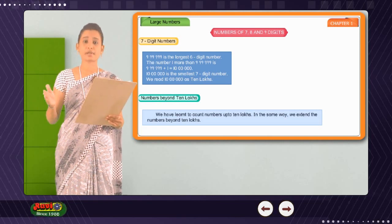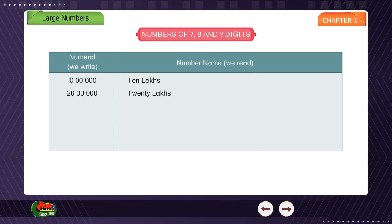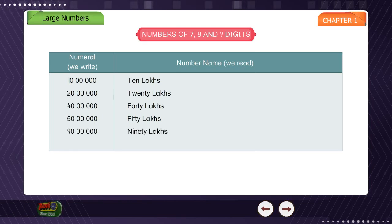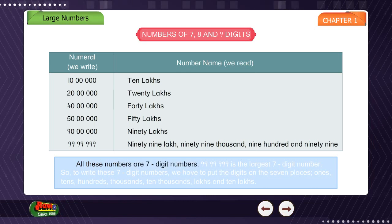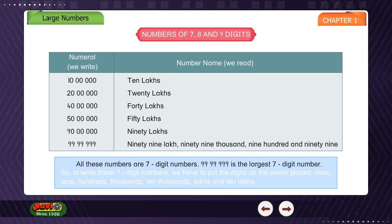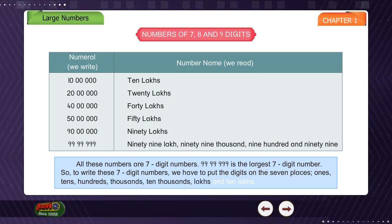Numbers beyond 10,00,000: We have learnt to count numbers up to 10,00,000. In the same way we extend the numbers beyond 10,00,000. The numerals we write include 10,00,000; 20,00,000; 40,00,000; 50,00,000; 90,00,000. All these numbers are 7-digit numbers. To write these 7-digit numbers, we put digits on 7 places: 1s, 10s, 100s, 1000s, 10,000s, Lakhs, and 10 Lakhs.